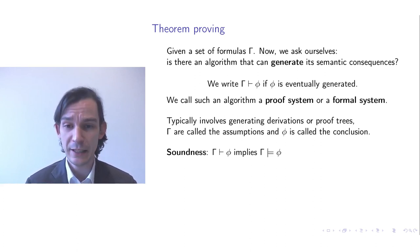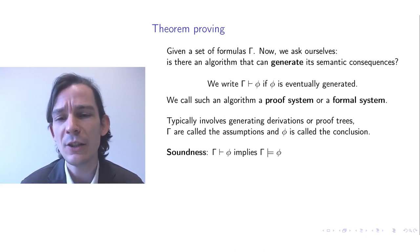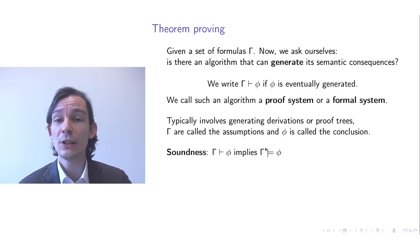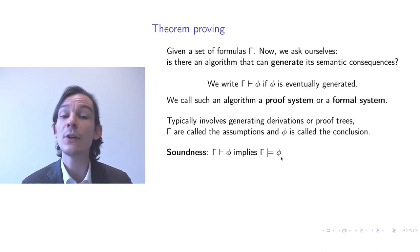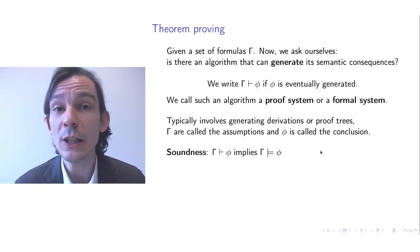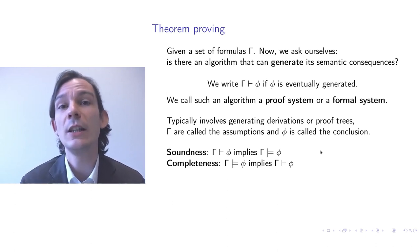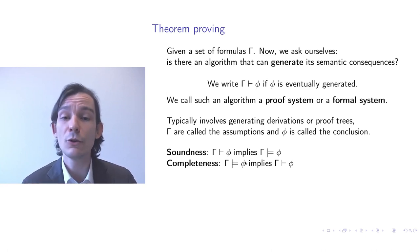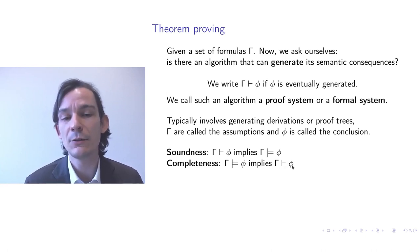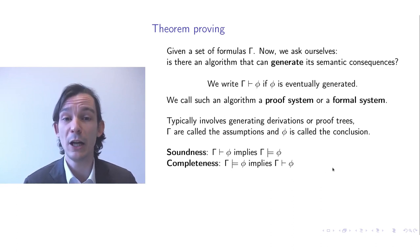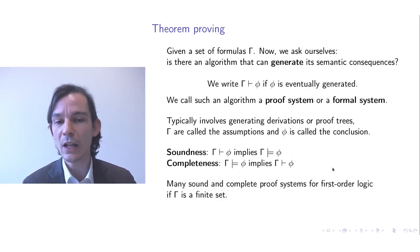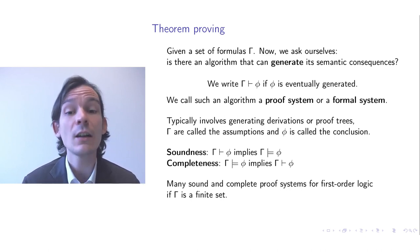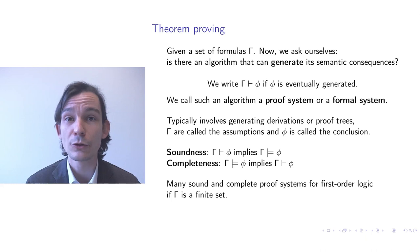We call an algorithm sound if it satisfies soundness: if from a set of formulas gamma we eventually generate phi, then it must also be the case that phi is a semantic consequence of gamma. Furthermore, there is the meta property of completeness: if phi is a semantic consequence of gamma, then phi must also eventually be generated by the algorithm. If gamma is a finite set, then there are many sound and complete proof systems for first-order logic.